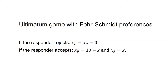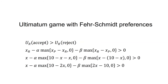The responder will accept if the utility of accepting is greater than the utility of rejecting. If we substitute in the Fehr-Schmidt utility function, that means they will accept if XR minus alpha times max(XP minus XR, 0) minus beta times max(XR minus XP, 0) is greater than zero. Substituting in the payoffs when they accept, that becomes X minus alpha times max(10 minus 2X, 0) minus beta times max(2X minus 10, 0) is greater than zero.